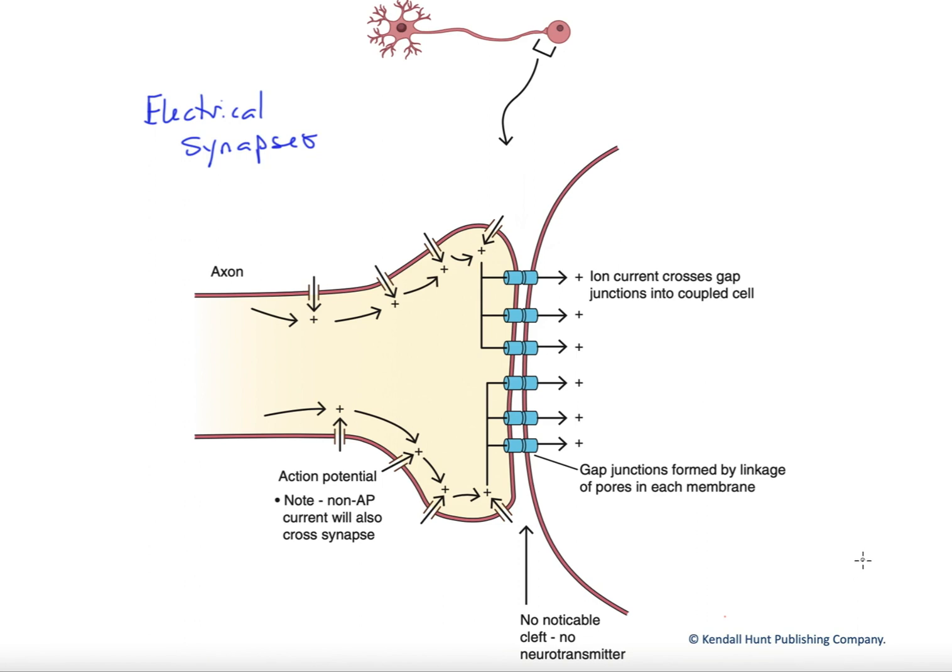And if you recall, chemical synapses are those that release a particular chemical, a neurotransmitter, that diffuses from the releasing cell to the target cell. And one of the downsides of releasing a neurotransmitter is speed. We have to rely on a diffusive component, which is always the slowest component.